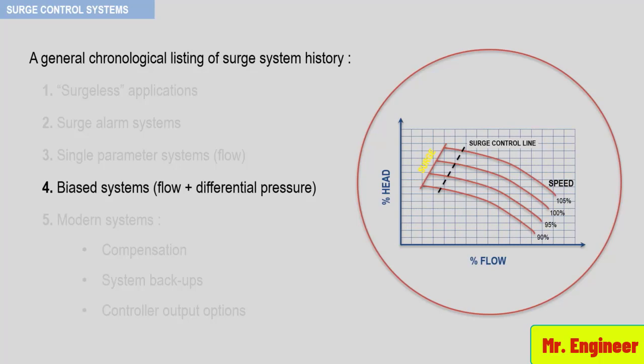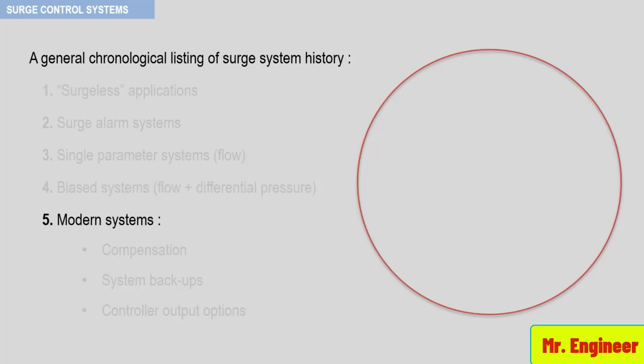The final system in the evolution of surge controls is the modern microprocessor system, which affords many options to protect the compressor against surge. These systems usually employ compressor inlet and discharge temperature inputs, in addition to flow and differential pressure for each compressor section. Examine the relationship for polytropic head as seen previously, and you will see that this approach yields a more accurate approximation of the operating point. This is because input of temperature at the inlet and discharge of the compressor allows the calculation of the following terms highlighted in blue.